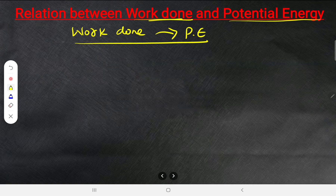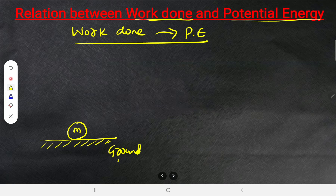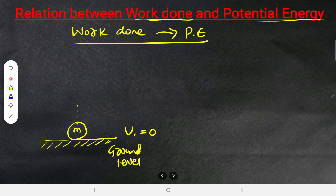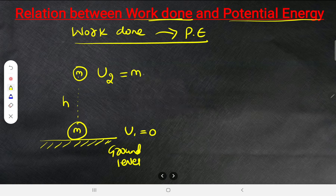Consider a body of mass m at the ground level — its potential energy is zero because height is zero. When raised to height h, it has potential energy U₂ = mgh. So the work done equals the change in potential energy: W = U₂ − U₁ = mgh − 0 = mgh.